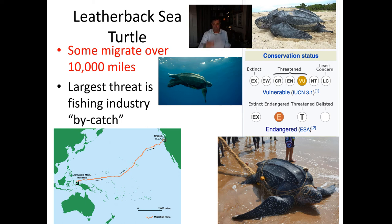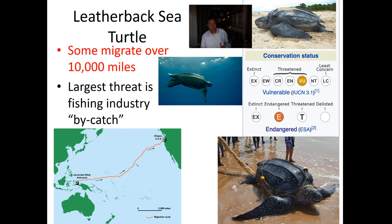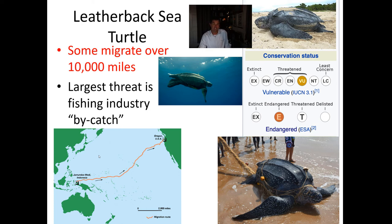The biggest threat to leatherback sea turtles happens to be the fishing industry — what we call bycatch. Many of the big fishing industry countries have very large nets out in the ocean, and sea turtles get trapped in them. If they're out there too long, the sea turtle gets tangled up in the net and drowns — they need to reach the surface to breathe. Unlike fish that can sometimes survive in nets for many hours, these animals end up dying. Bycatch is simply animals caught in nets that aren't the intended target and are just thrown back over.